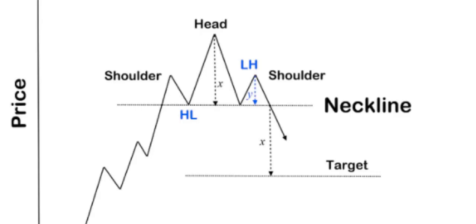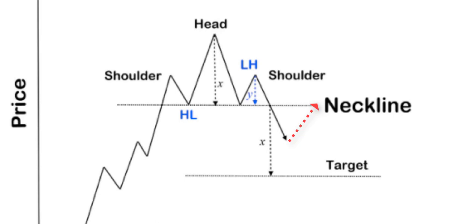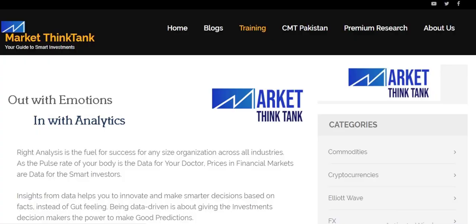As we know, head and shoulder is a price reversal pattern, and upon confirmations we can see a deep decline in price, at least to the level of the height. Most likely price performance could be a break below the neckline for two to three days and a pullback to the neckline for a retest, and then again a declining price action. We have explained this pattern in our training course in detail, specifically about the validation and initial requirements for classifying these patterns. For details about the course outline, you can visit the training section of our website.